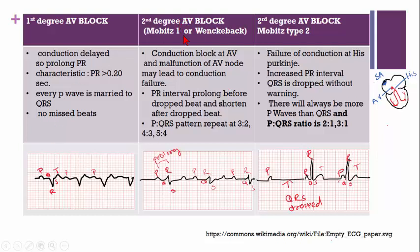In second degree AV block, it is also known as Mobitz Type 1 or Wenckebach — named after its author. There is a conduction block at the atrioventricular node, and malfunction of the AV node may lead to conduction failure.